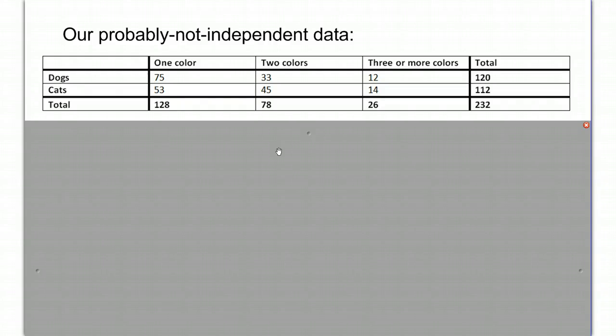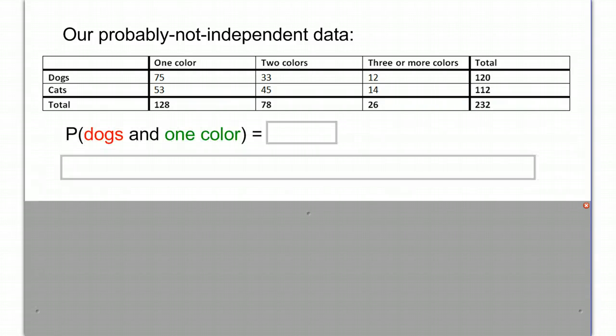Now, if we go back to our original question, we have our actual data that we got. And let's answer this question. What's the probability of having dogs and of having one color? We said earlier that it has to be dogs, it has to be one color, and the probability of both is where they intersect. So there's 75, and it would be out of our big total, 232. So 75 out of 232.